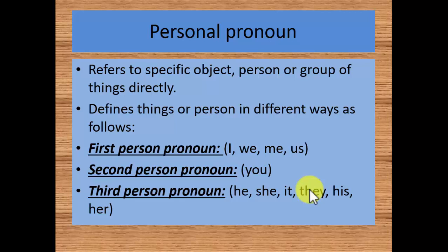First type is Personal Pronoun. Personal Pronoun actually can be used to directly refer to any person, any object or any person who can directly refer. There are 3 different types of personal pronouns. First Person Pronoun, Second Person Pronoun and Third Person Pronoun.